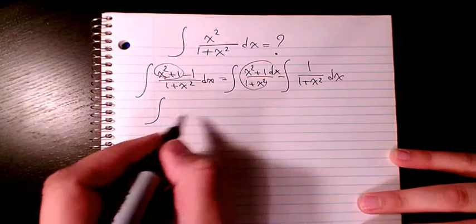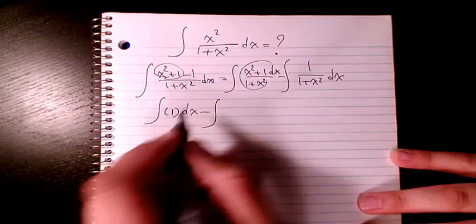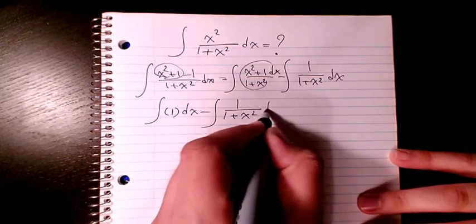Because numerator and denominator are the same, so it's going to be 1 dx minus 1 over (1 plus x squared) dx.